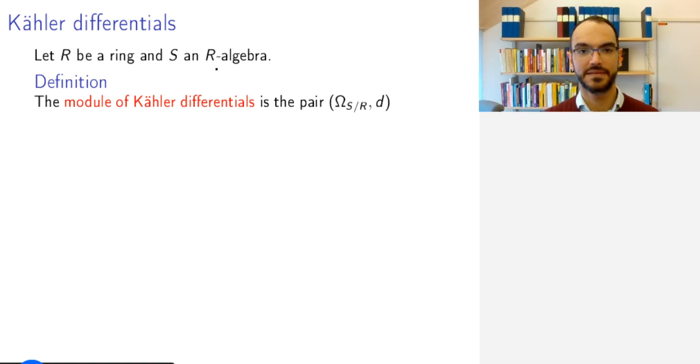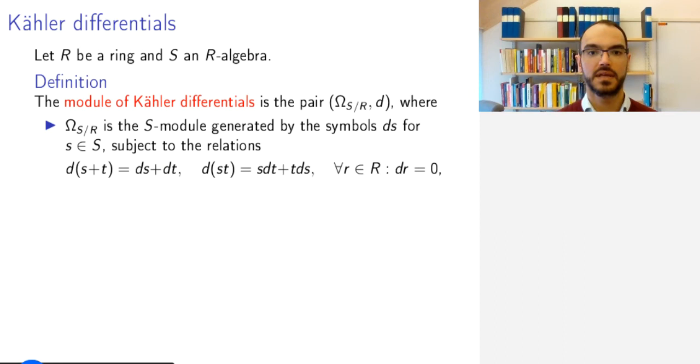The module of Kähler differentials associated to this pair of algebras is a pair of two things. First, Ω_{S/R} is an S-module generated by the symbols ds for s in S, subject to these familiar relations that we had from before.